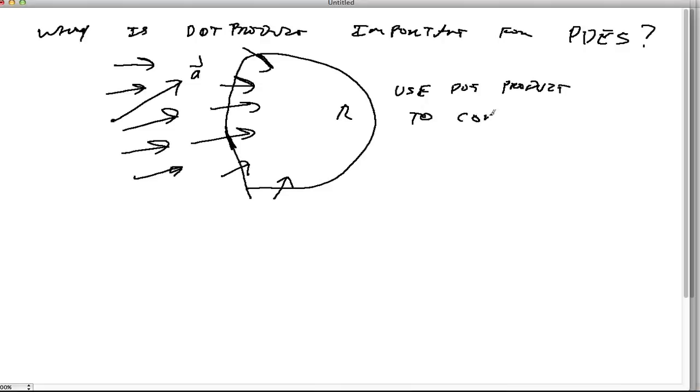So the question then is, and it turns out we're going to use the dot product to compute flux, to compute the flux of quantity, of some quantity, into, or through a boundary. Alright, and to do that, we need the dot product.